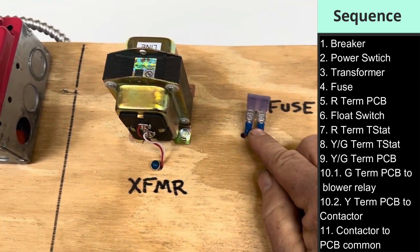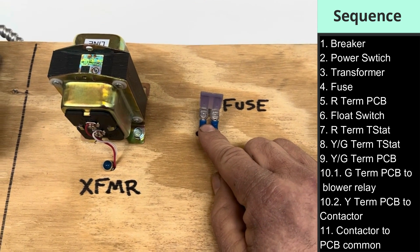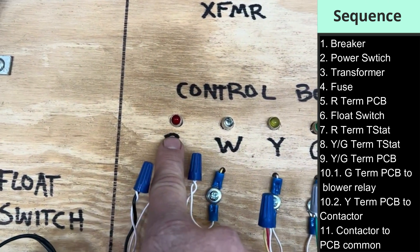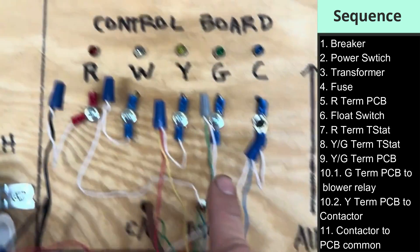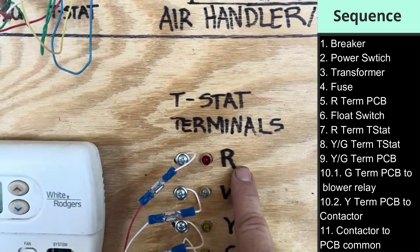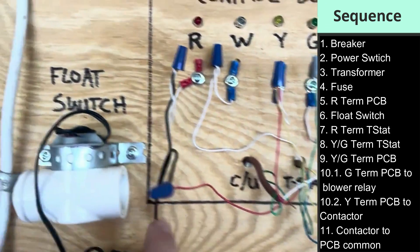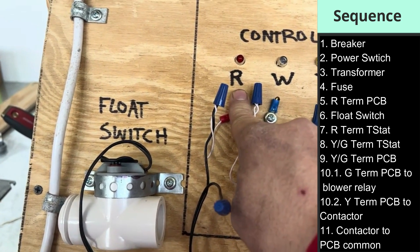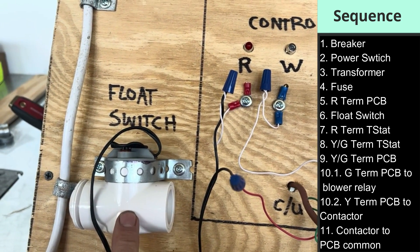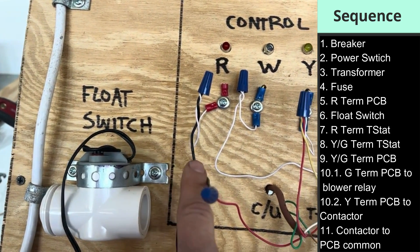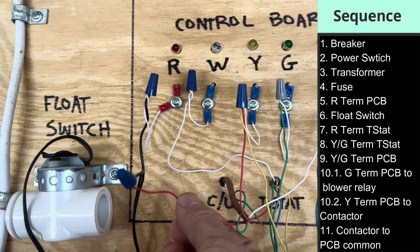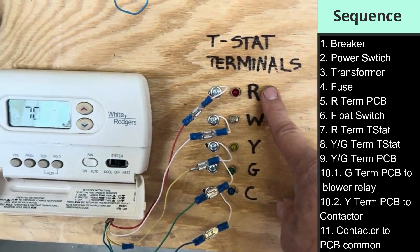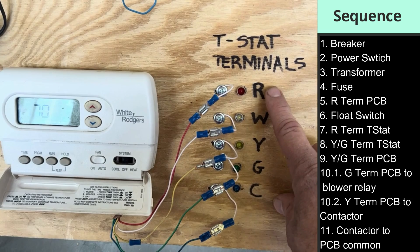From the transformer it's going to go through a fuse — this is going to be a 3 or 5 amp fuse, most often located right on the control board. Once that 24 volts goes through the fuse, it comes to the R terminal on our control board. From there it usually goes straight to the R terminal on our thermostat, but a lot of systems are going to have a float switch in between. The 24 volts comes off the R terminal on the control board, goes into one wire of the float switch, through the float switch, out the other wire, and then travels down the red wire to the R terminal on our thermostat.